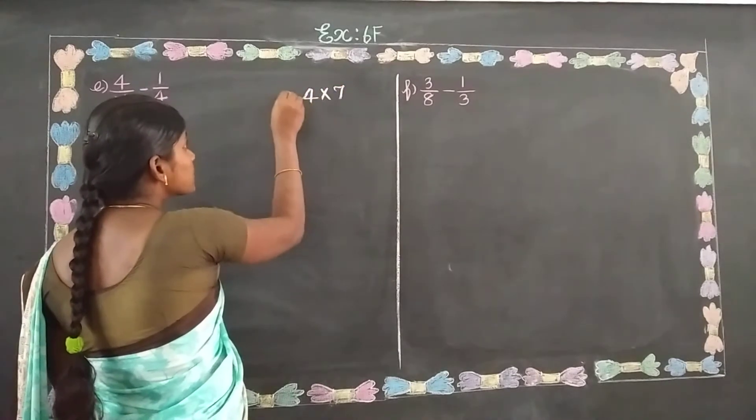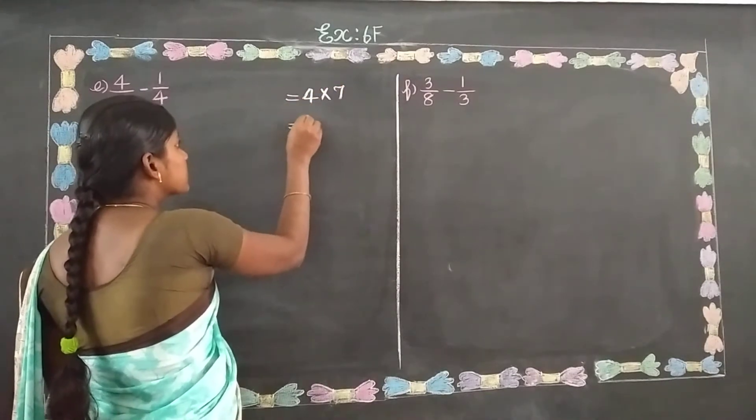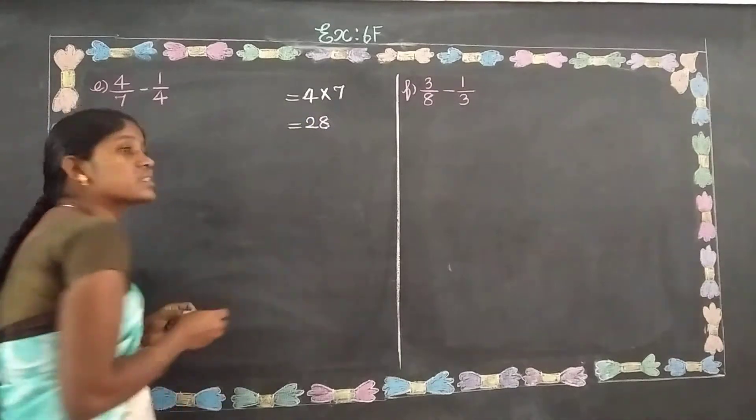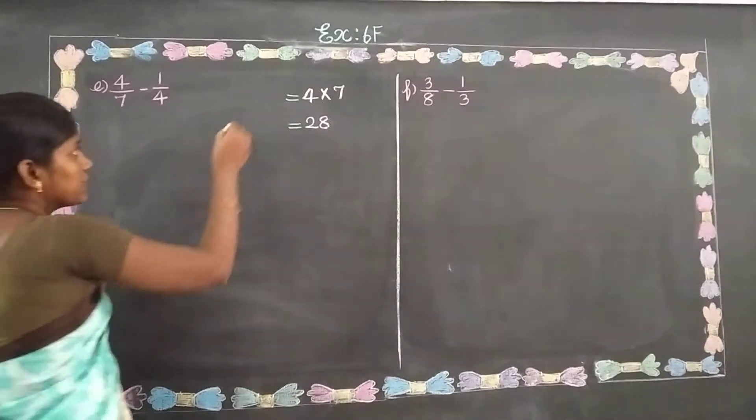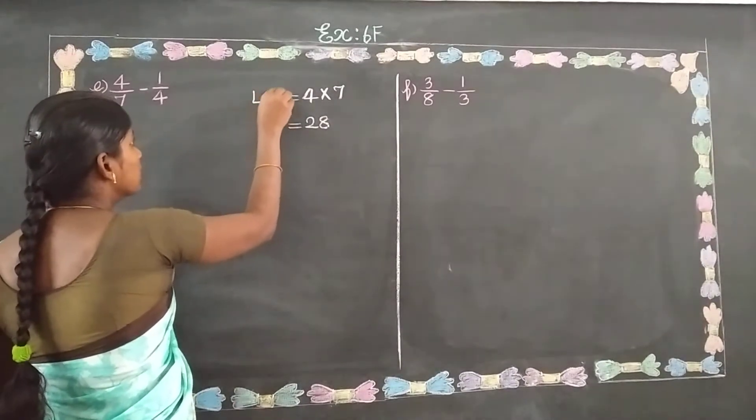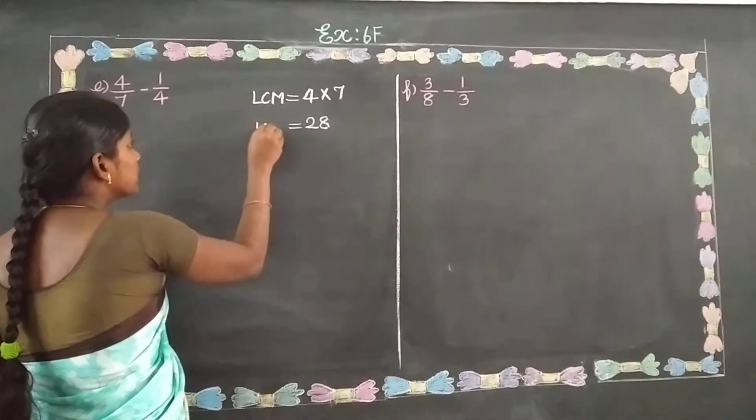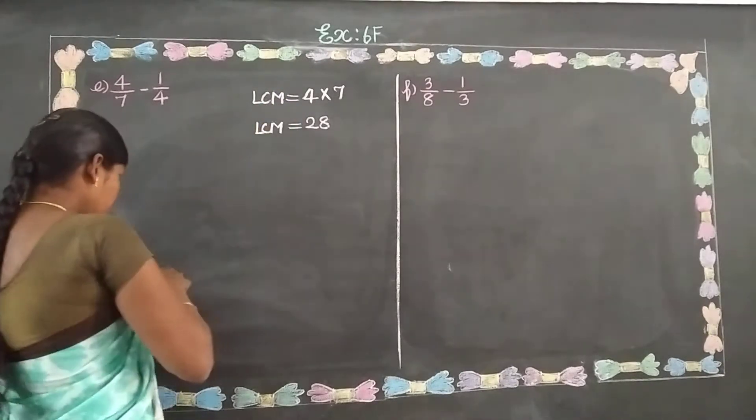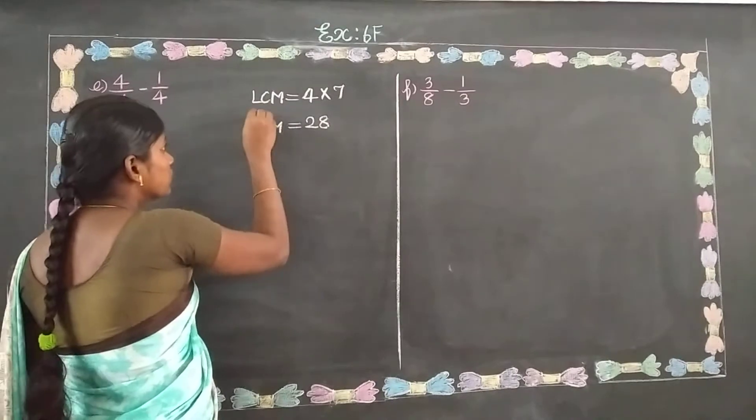So 4 sevens are 28. 4 sevens are 28. So LCM equals 28.